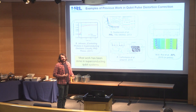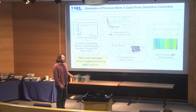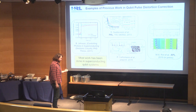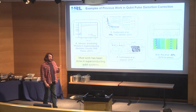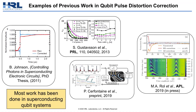Before I get into the details of our implementation, I'm first going to mention that other groups have worked on this sort of technique before, mostly in superconducting groups. They've used some form of implementing pre-distortion in qubit control sequences, although recently there has been some more work using quantum dot qubits as well.